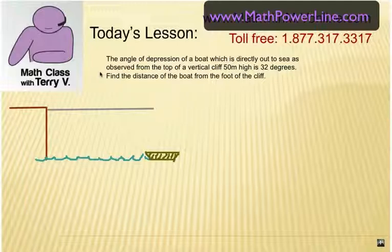Here we go. The angle of depression of a boat which is directly out to sea, as observed from the top of a vertical cliff 50 meters high, is 32 degrees. Find the distance of the boat from the foot of the cliff. I have a beautiful artistic drawing here that is going to help us with this problem. Let me put the numbers in as we know them.